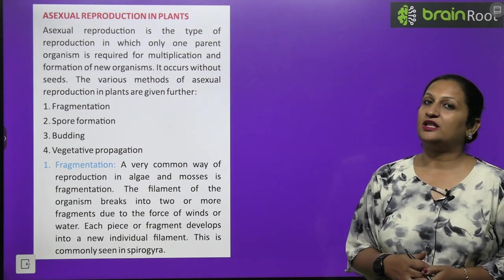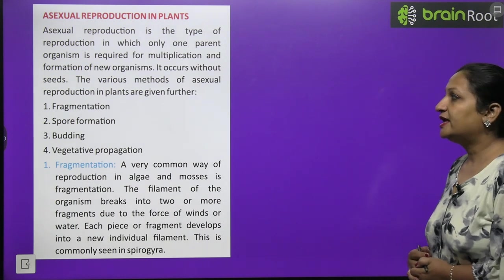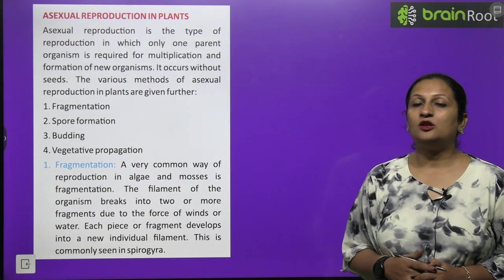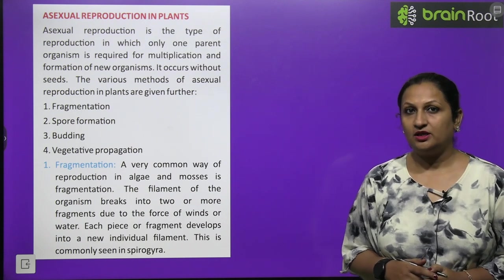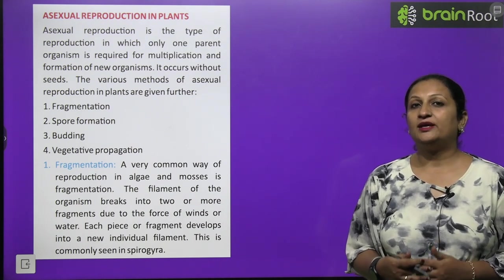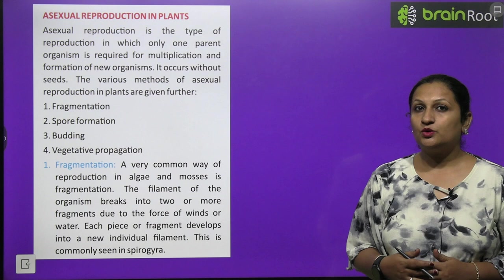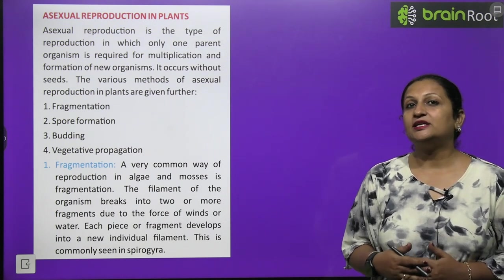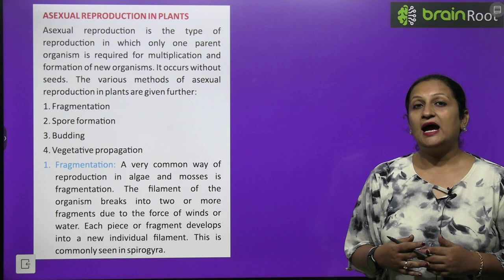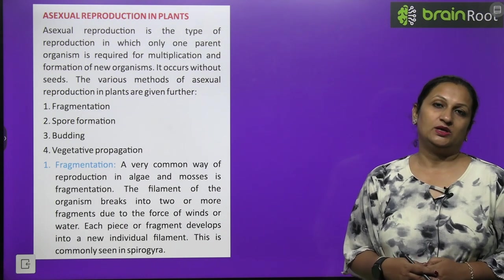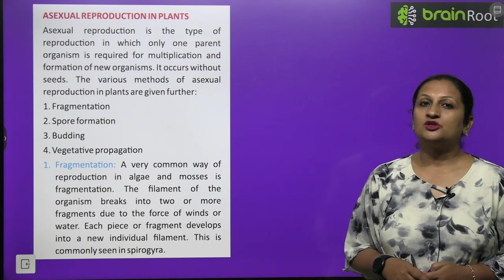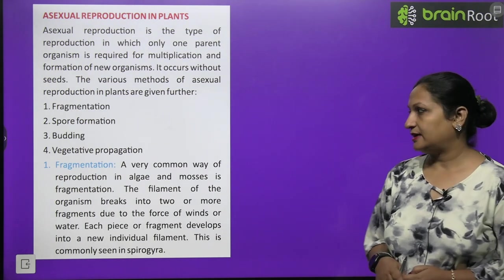Then you have budding. In budding, a small bud appears on the parent body. Then this bud takes nutrition from the parent and grows bigger. When it has sufficient weight, it detaches from the parent and falls down and starts behaving as a new individual. Budding can be easily seen in case of yeast or we can see it in hydra.